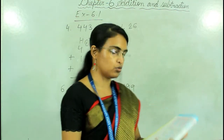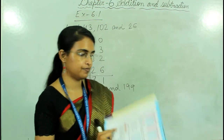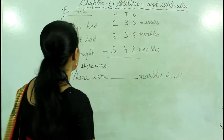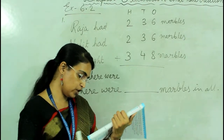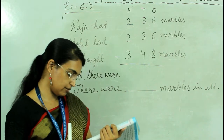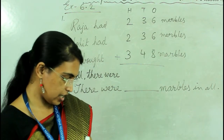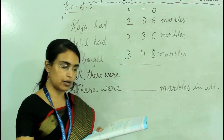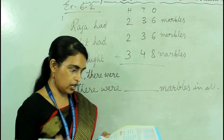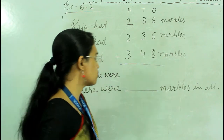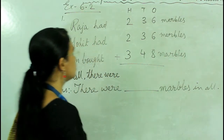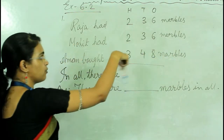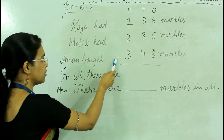Now we will do exercise 6.2: solve the following word problems. Question 1: Rajya and Komi had some markers. Rajya had 236 markers and Komi had 236 markers. Komi brought 348 more markers. We have to find the total number of markers altogether, so we do addition.